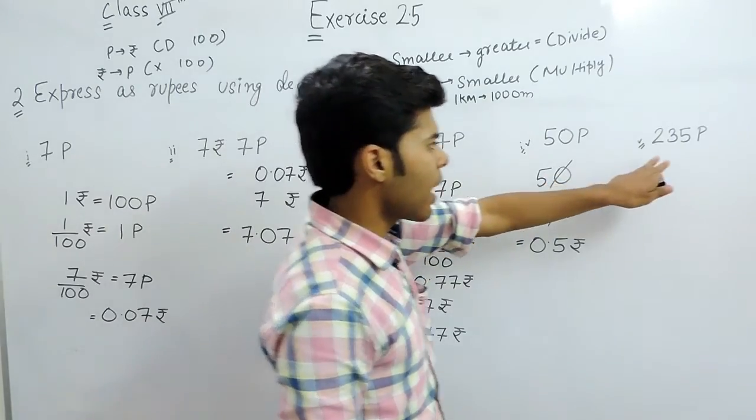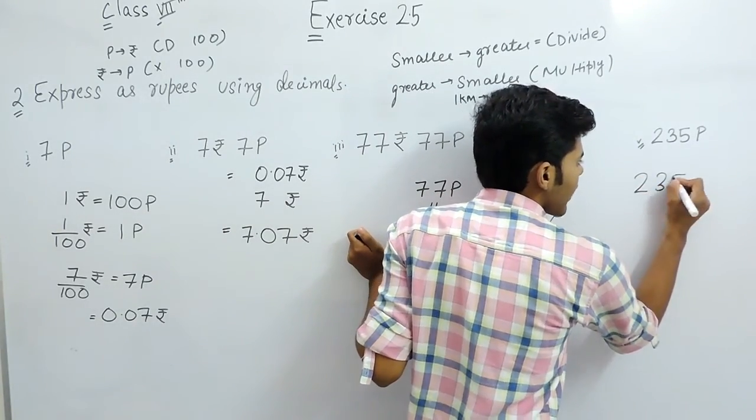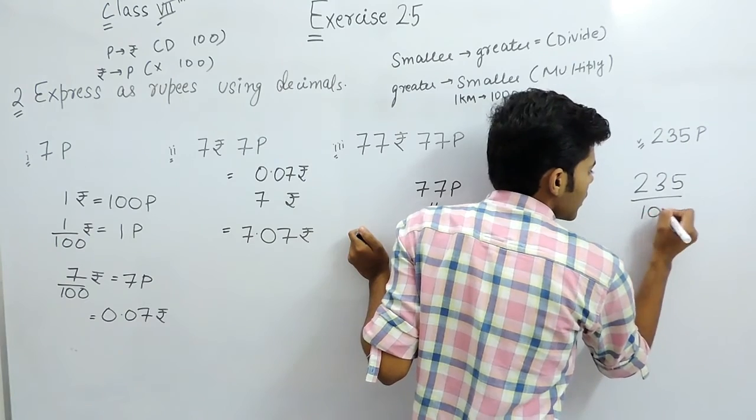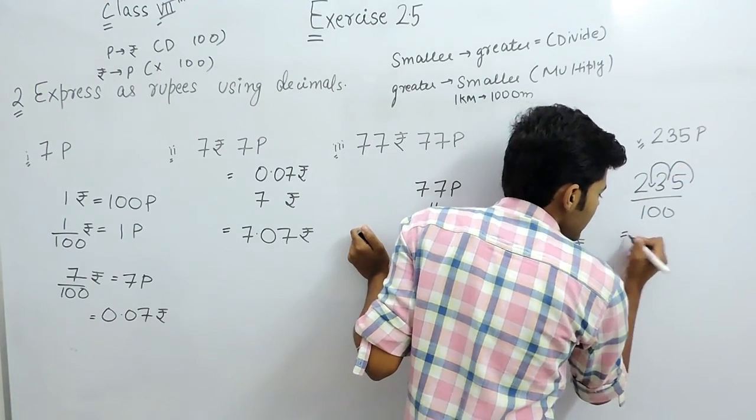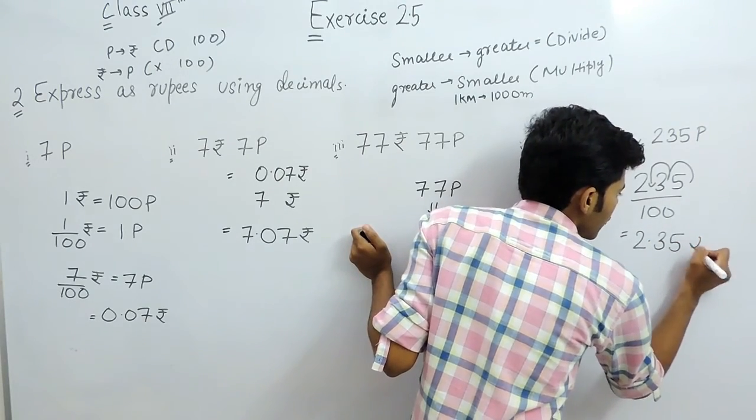And in the last part, we will again divide this 235 by 100. Point will be shifted 2 times left side and it will give us 2.35 rupees.